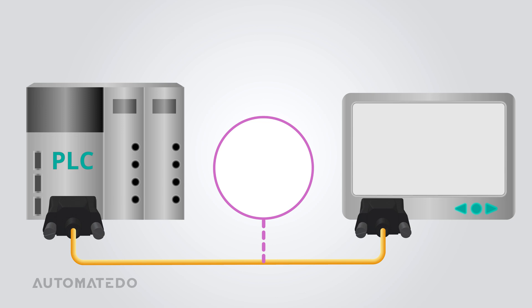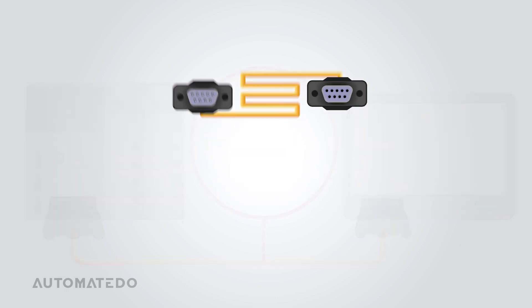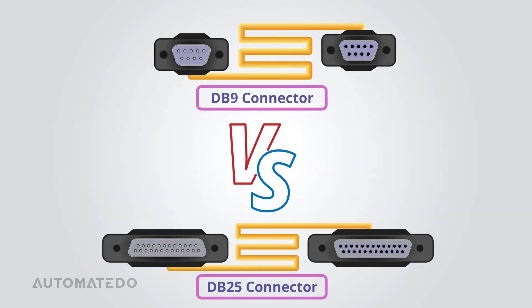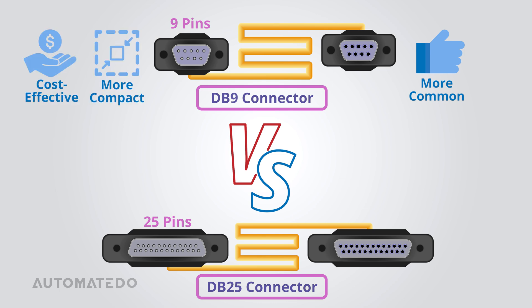RS-232 commonly utilizes sub-miniature connectors known as DB9 and DB25. The DB9 connector features nine pins, while the DB25 connector has 25 pins, each serving specific signal and control functions. Many manufacturers adopted 9-pin serial connectors for RS-232 interfaces instead of the larger 25-pin connectors because 9-pin connectors are more compact, cost-effective, and provide enough pins for most connections.